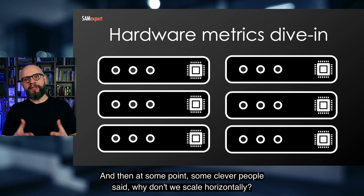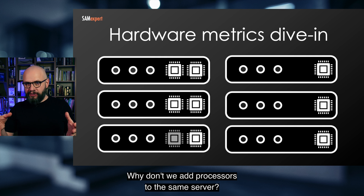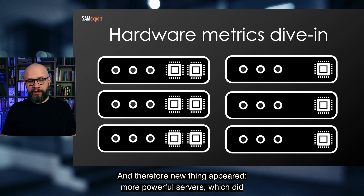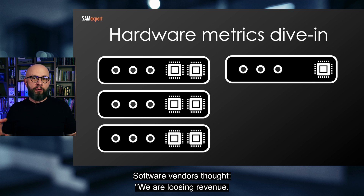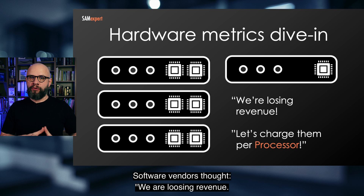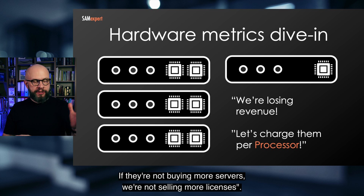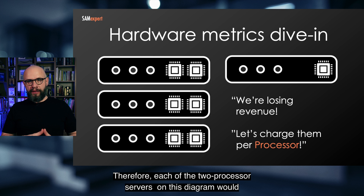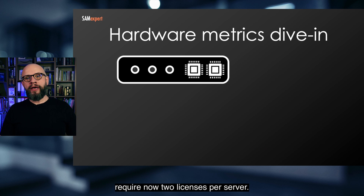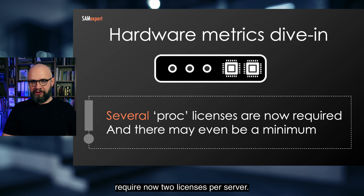At some point, some clever people said, why don't we scale horizontally? Why don't we add processes to the same server? And therefore a new thing appeared: more powerful servers which did not require additional licenses. Software vendors thought, we're losing revenue — if they're not buying more servers, we're not selling more licenses. So they decided to switch some products to per-processor licensing. Therefore, each two-processor server on this diagram would now require two licenses per server.